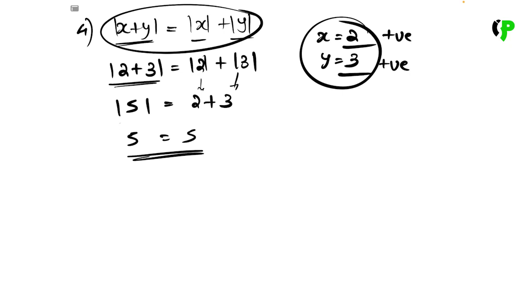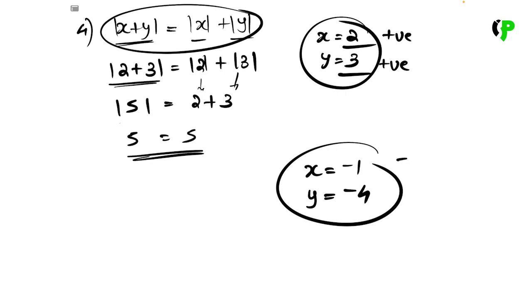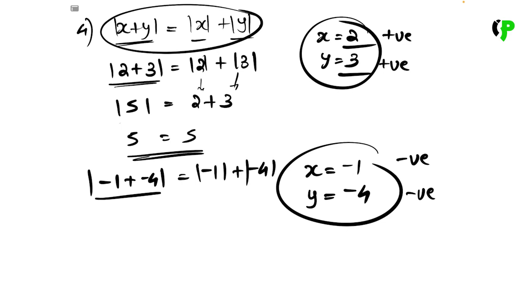Now let x equal negative 1 and y equal negative 4. Modulus of negative 1 plus negative 4 equals modulus of negative 5, which equals 5. Modulus of negative 1 plus modulus of negative 4 equals 1 plus 4, which also equals 5. So we have equality again.